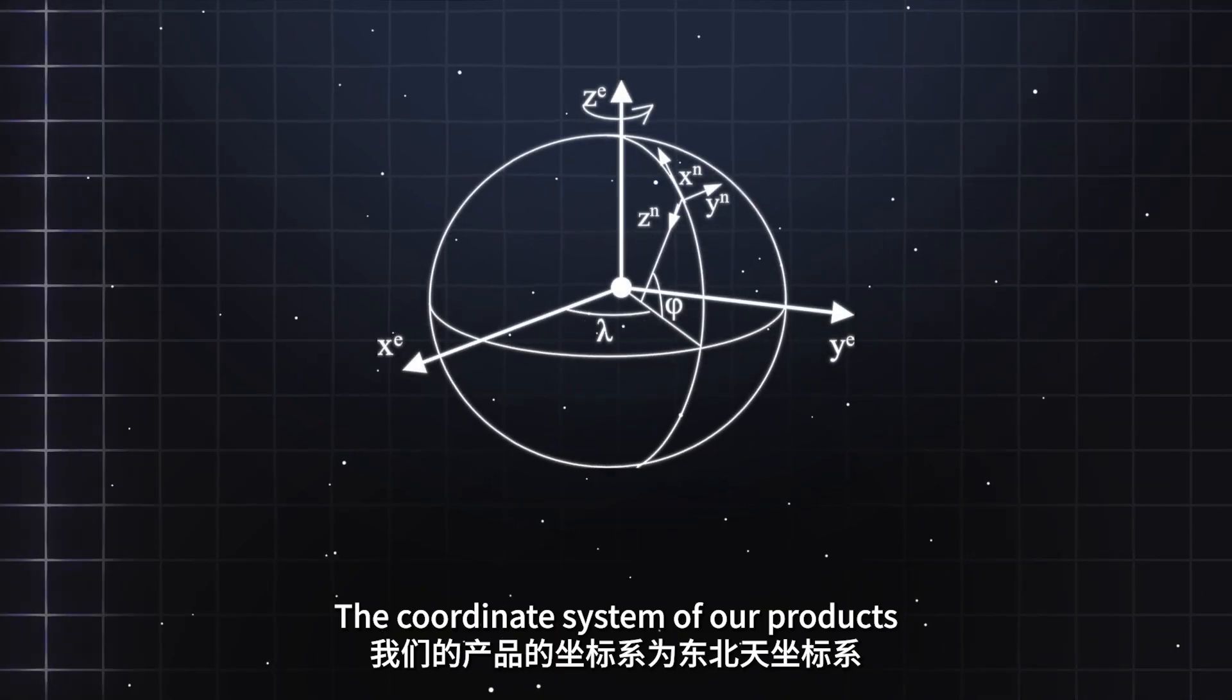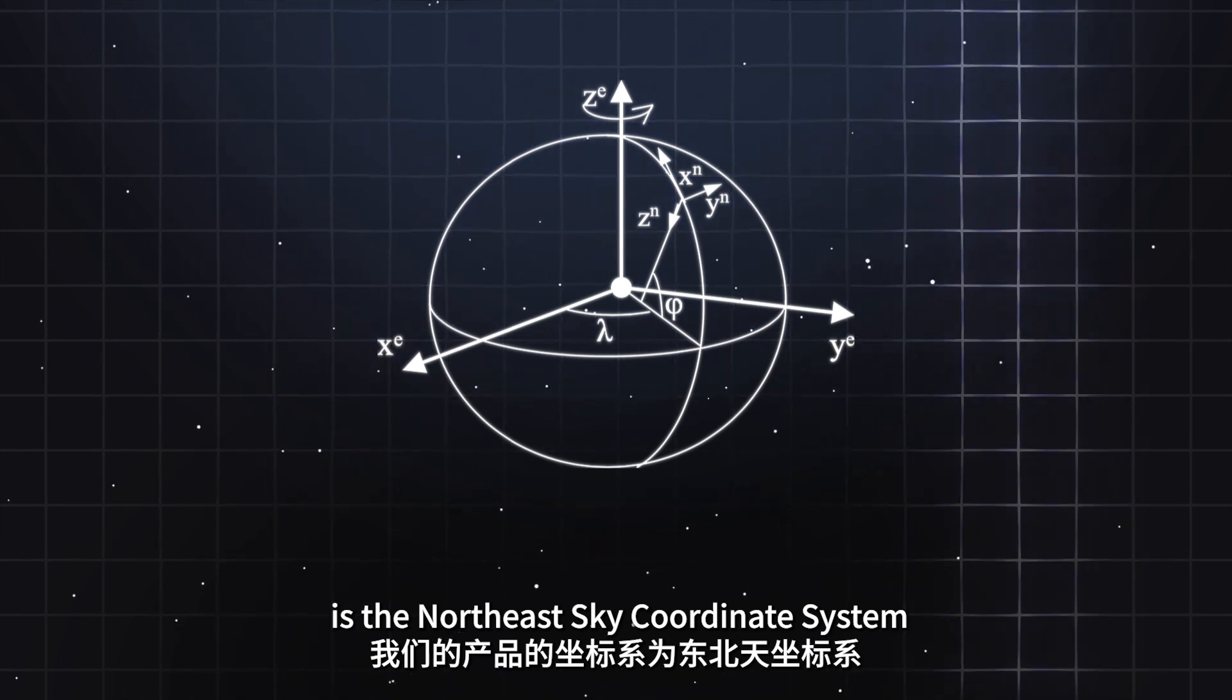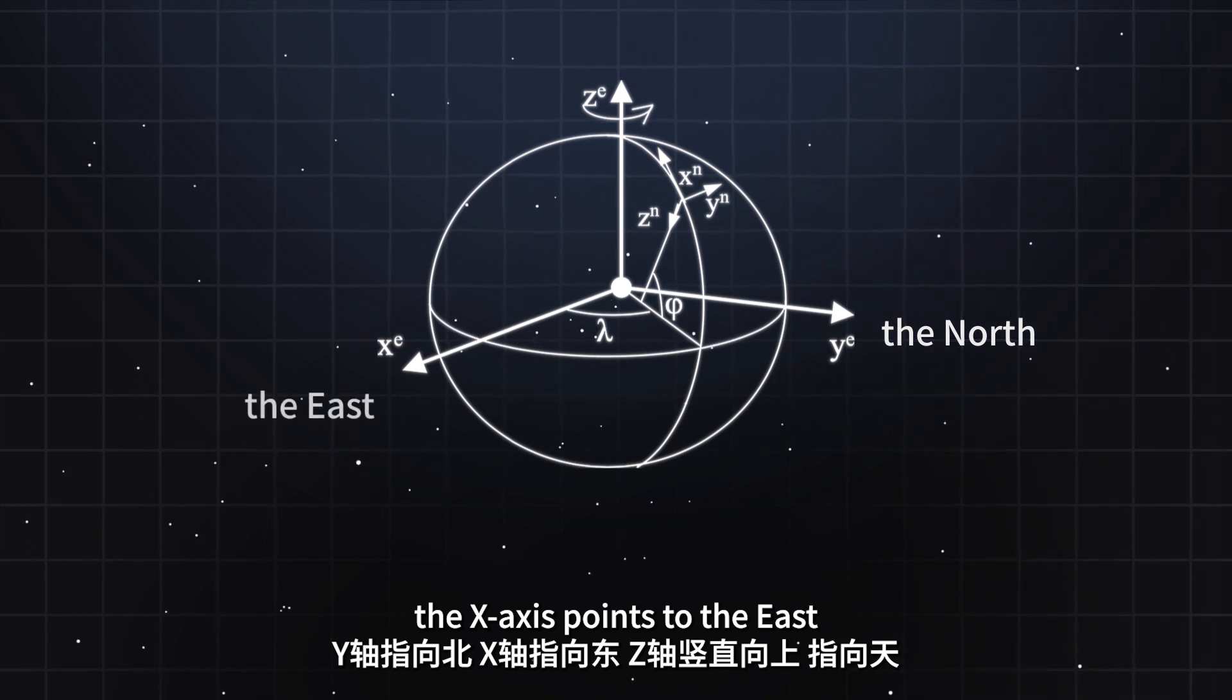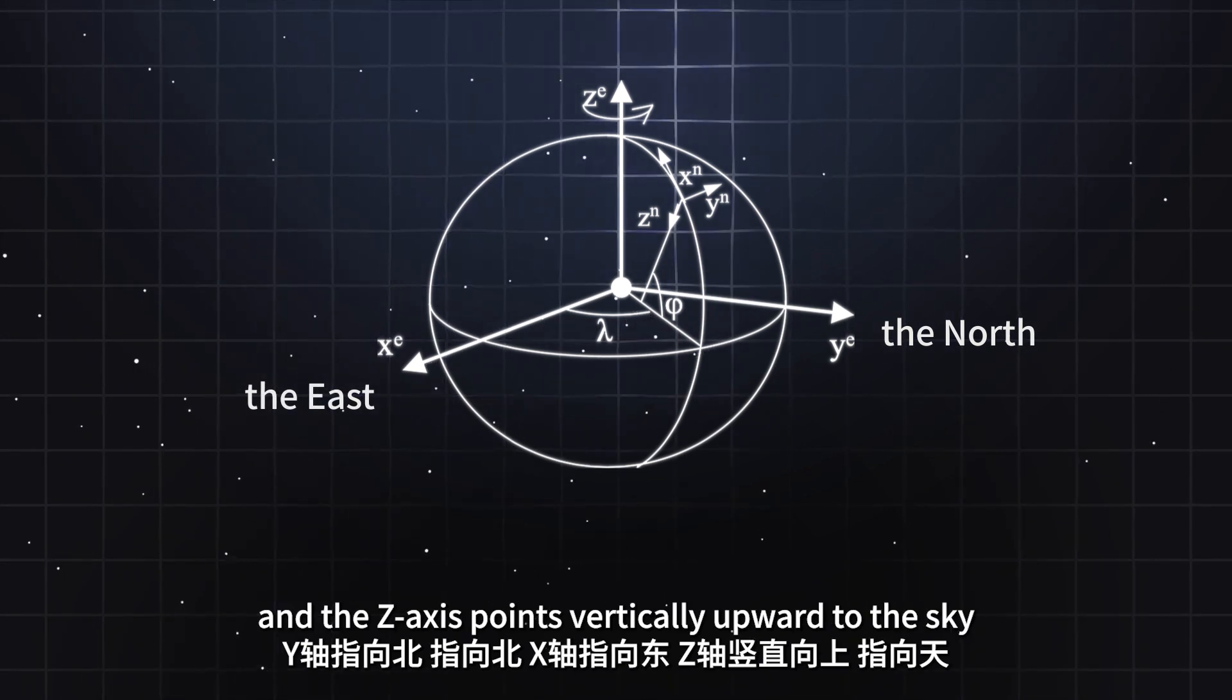The coordinate system of our products is the northeast sky coordinate system. The y-axis points to the north, the x-axis points to the east, and the z-axis points vertically upward to the sky.